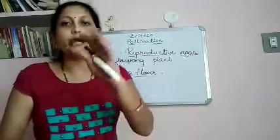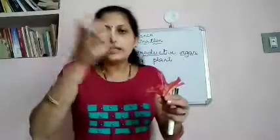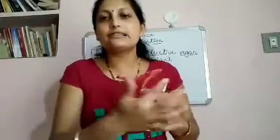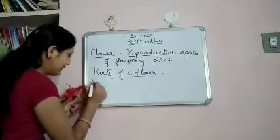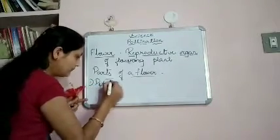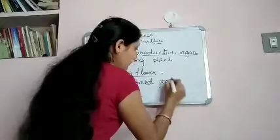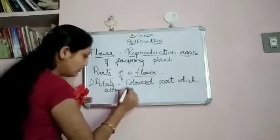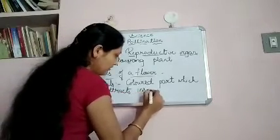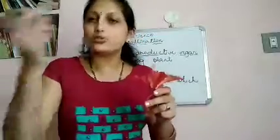I will explain what pollination is and why insects are necessary. But for now, for pollination to take place, the flowers need to attract insects — and that is done by the petals. Petals are the colored part of the flower and they attract insects towards the flower.